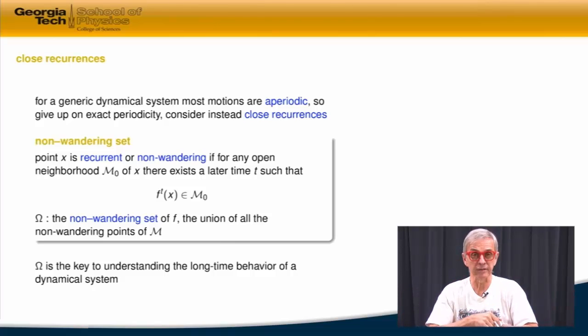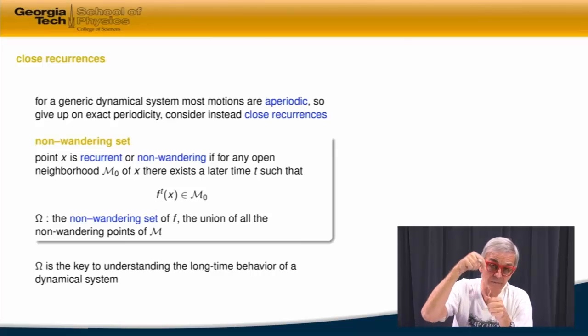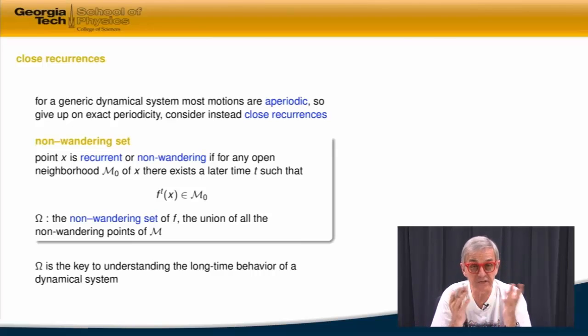If you need to solve some problem to precision 1% or 10 to the minus 11, if you're doing particle physics or astronomy, you just have to work hard enough to find something that started in some neighborhood and after some time re-enter the neighborhood with precision of 1%. That's called a recurrence.